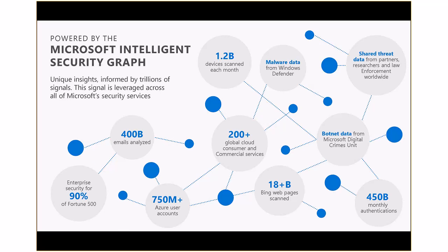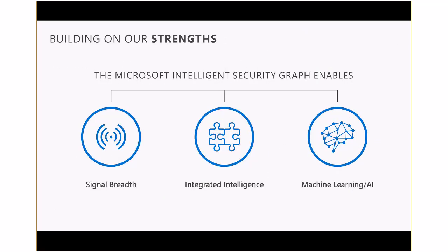The reason why the Microsoft value proposition around threat protection and intelligence security management is such a compelling value proposition is because with both these areas, as we do with identity and access management and information protection, we actually build on our strengths. These strengths are billions and billions of signals in the intelligence security graph — all that global intelligence, which is a combination of human-collected data plus machine learning and system data — as well as the fact that we have all our platforms integrated into that intelligence.